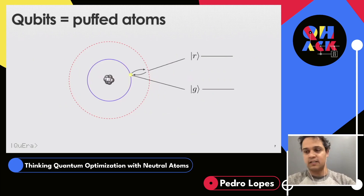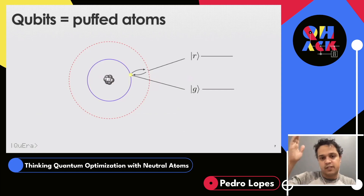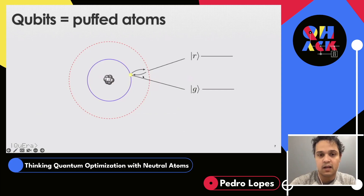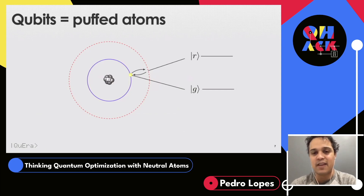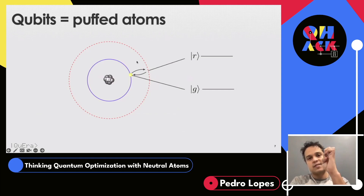Now let's dive into how neutral atom quantum computing works. Qubits are encoded in rubidium atoms here at QuEra. Rubidium is an alkali atom — it lives in the first column of the periodic table — and for all practical purposes, it's like a heavy hydrogen atom with only a single electron. We can choose many different ways to encode information. For us, the ground state is the 5s state, and our excited state — the |1⟩ of the qubit register — is a Rydberg state, specifically the 70s state.